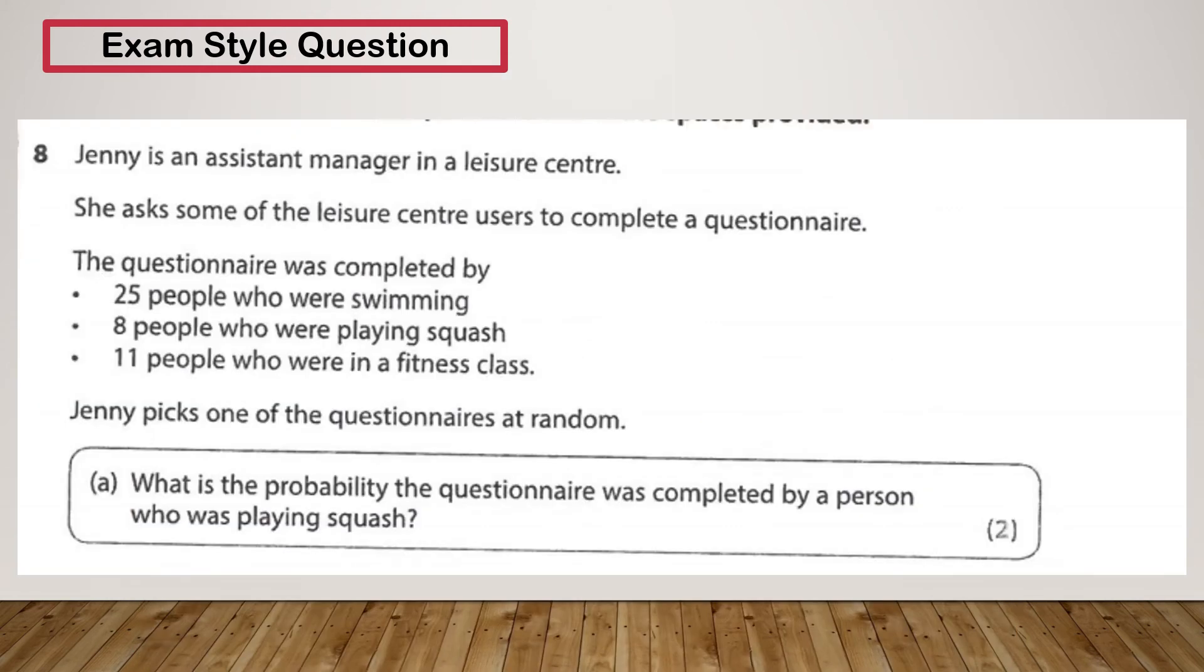Let's have a look at one more in regards to probability, and then we're going to look at the probability of things not happening. So Jenny's the assistant manager in a leisure centre. She asks some of the leisure centre users to complete a questionnaire. It was completed by 25 people who were swimming, 8 who were playing squash, and 11 who were in the fitness centre. She picks a questionnaire at random. What's the probability it was completed by someone playing squash? Two marks.